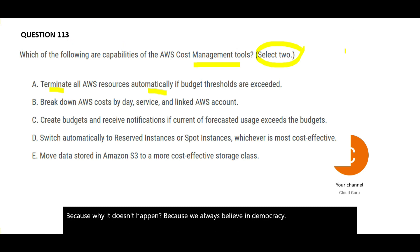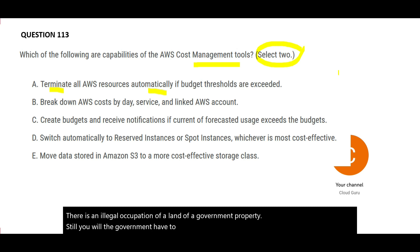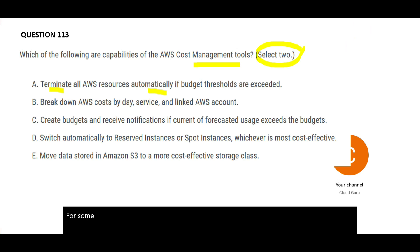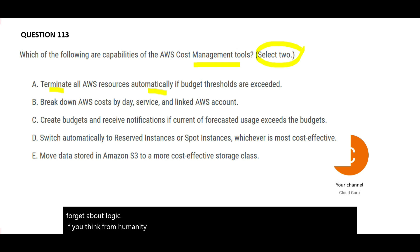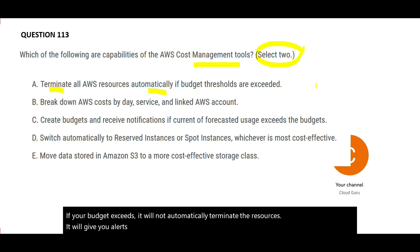Just like a government must issue a notice before removing an illegal occupation rather than immediately sending bulldozers, AWS will not automatically terminate your resources if the budget exceeds the threshold. It will give you alerts and enough time to take action. Option A is wrong.